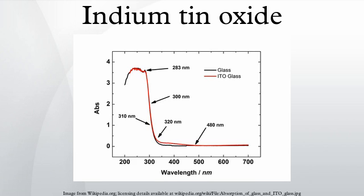Indium-tin oxide is a ternary composition of indium, tin, and oxygen in varying proportions. Depending on the oxygen content, it can either be described as a ceramic or alloy.